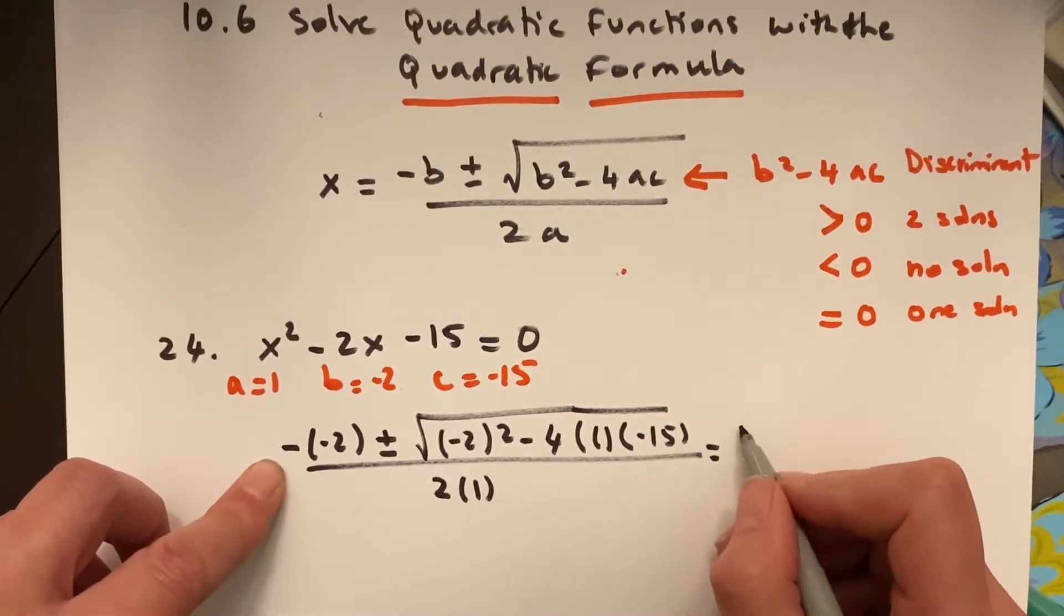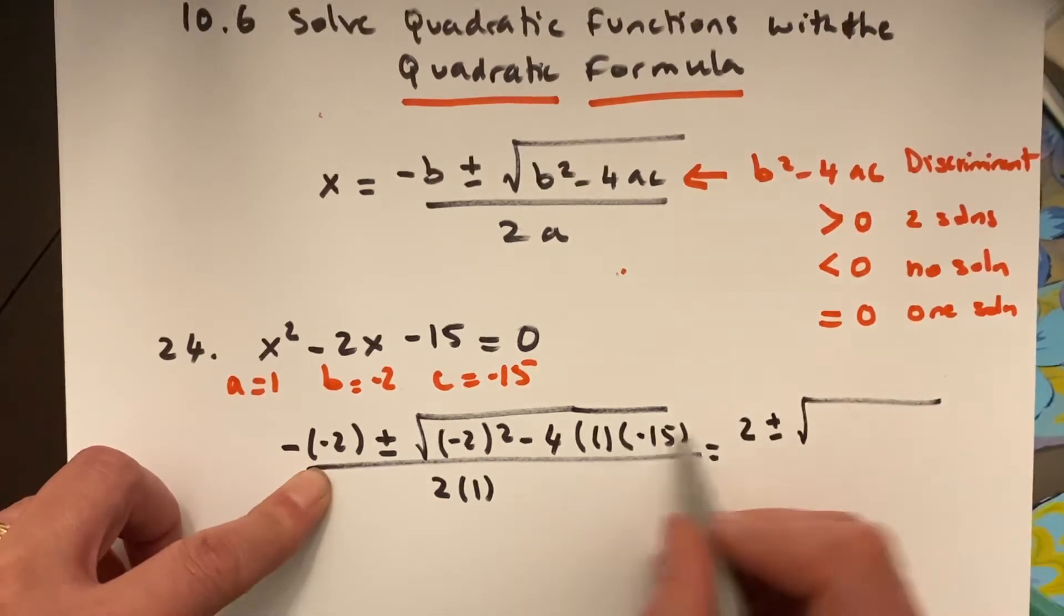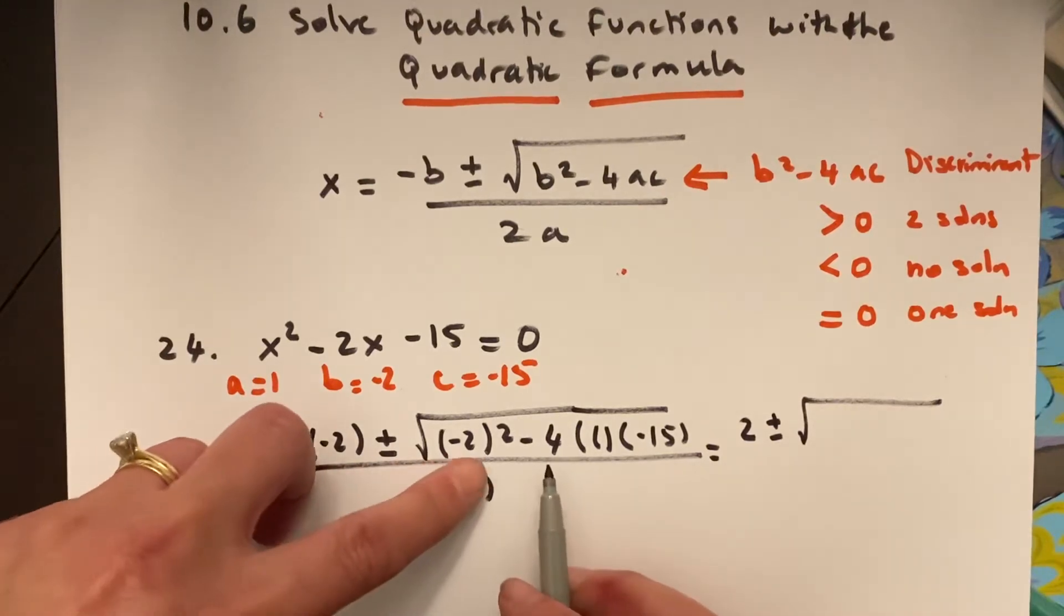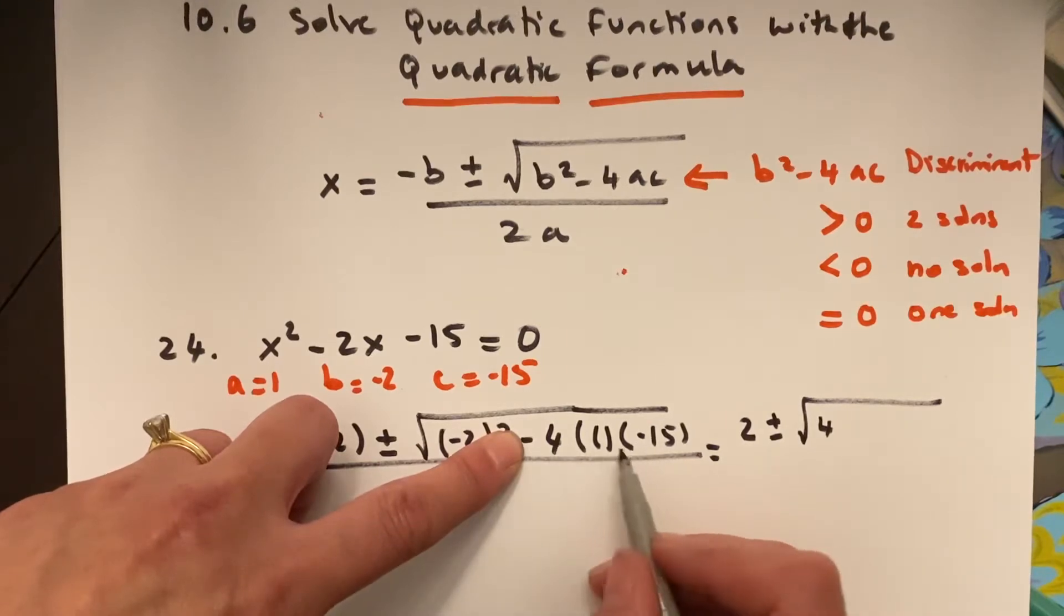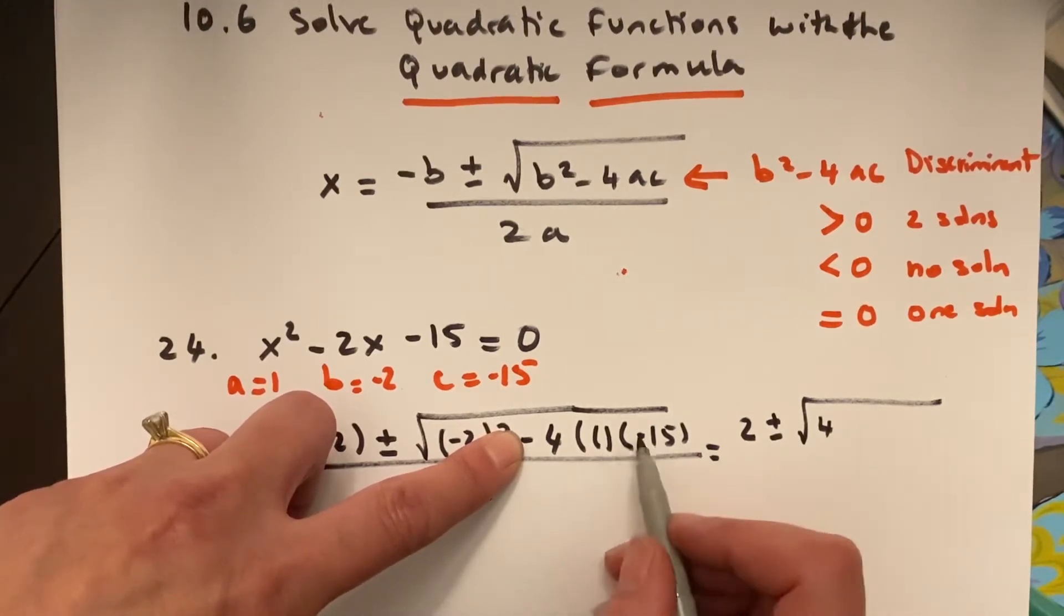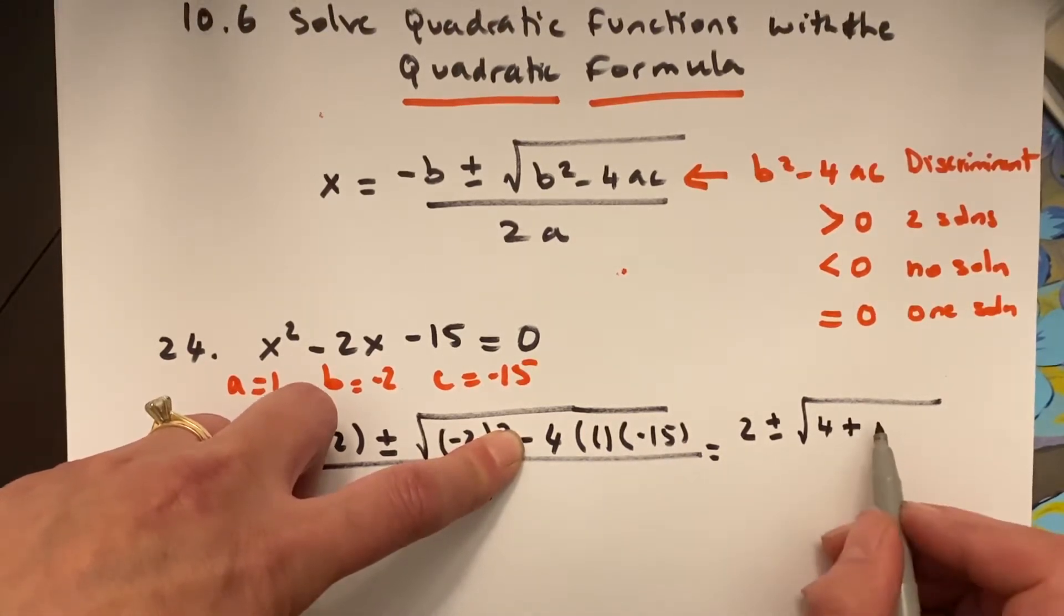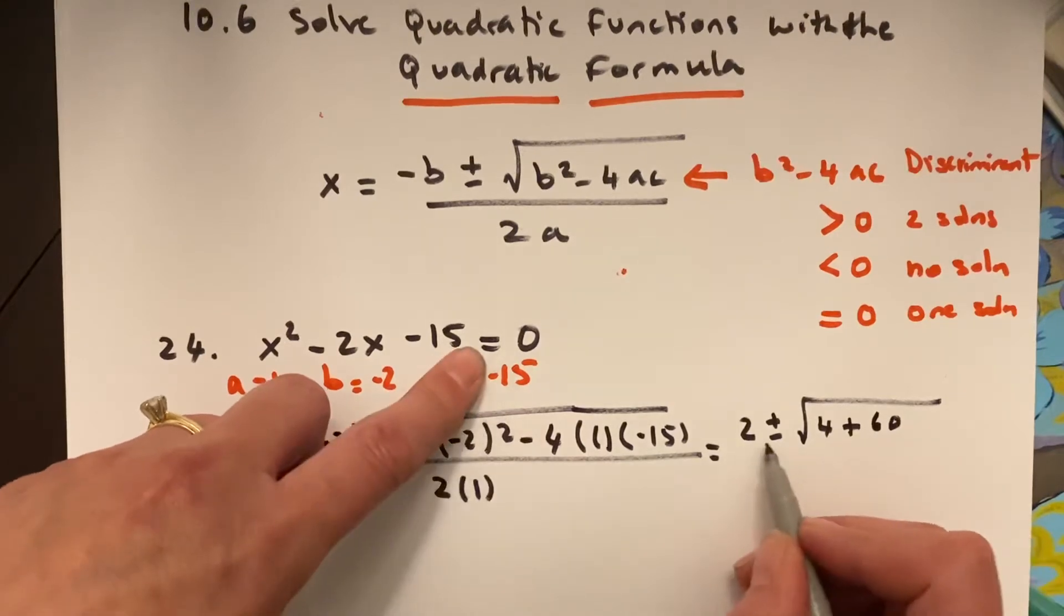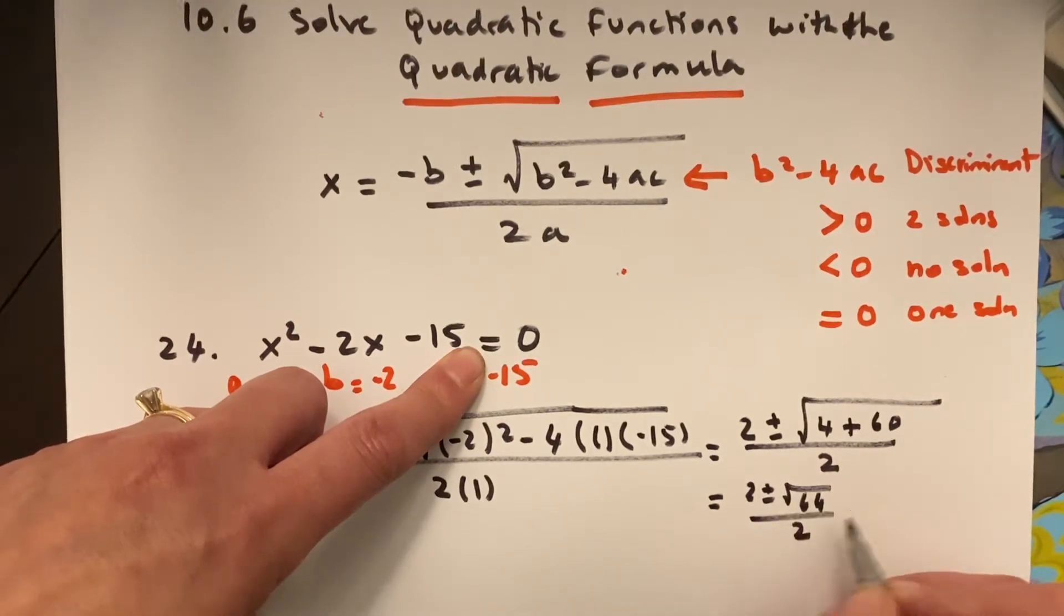So, I get a positive 2, because negative negative, plus or minus the square root of, and here I have 4, and I have two negatives, right? Negative 4 and negative 15, so when you have an even number of negatives, it's going to be a positive, so plus, and 4 times 15 is 60, over 2. And this gives me 2 plus or minus the square root of 64, over 2. The square root of 64 is 8, so 2 plus or minus 8, over 2.